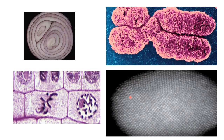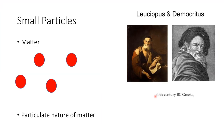That process started with experimentation in the 1800s and continued into the 1900s. We're going to take a look at some of the scientists involved in the discovery of the parts that make up the atom — those parts being the protons, the neutrons, and the electrons.